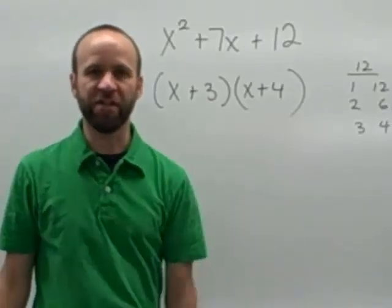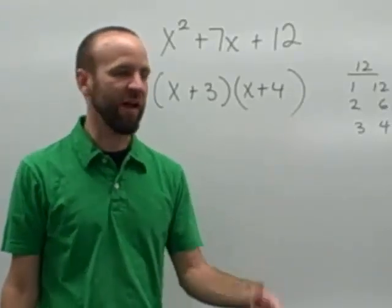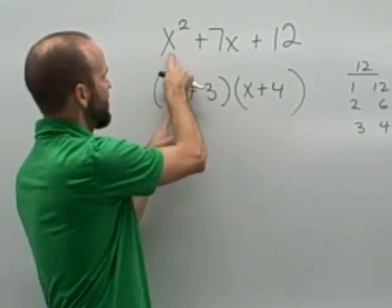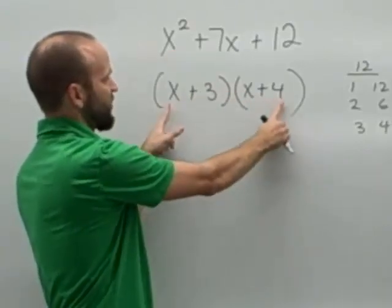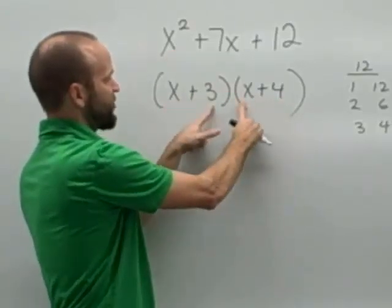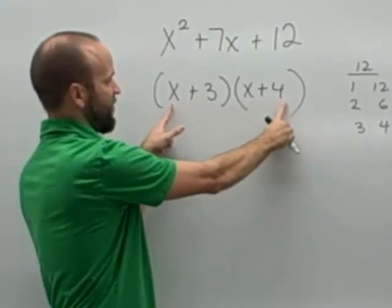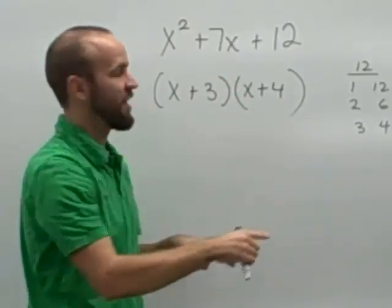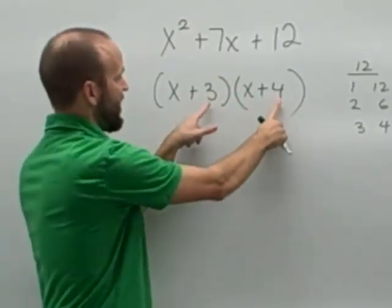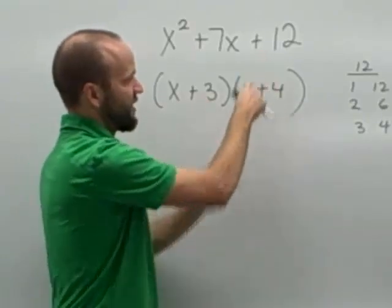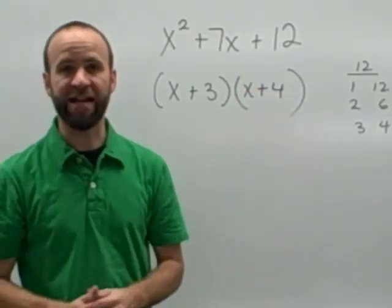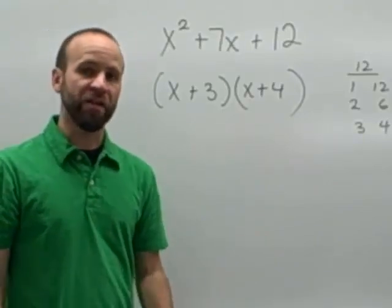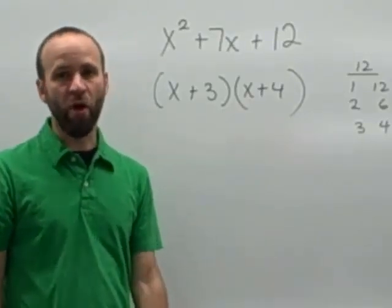We can check to make sure this is true just by multiplying this out. x times x would give me the first term, x squared. If I multiply the outer and inner terms, I get 4x plus 3x, which gives me the middle term 7x. And if I multiply the last terms, 3 times 4 is 12. It really is that easy. But again, this is only for a trinomial with a leading coefficient of 1.